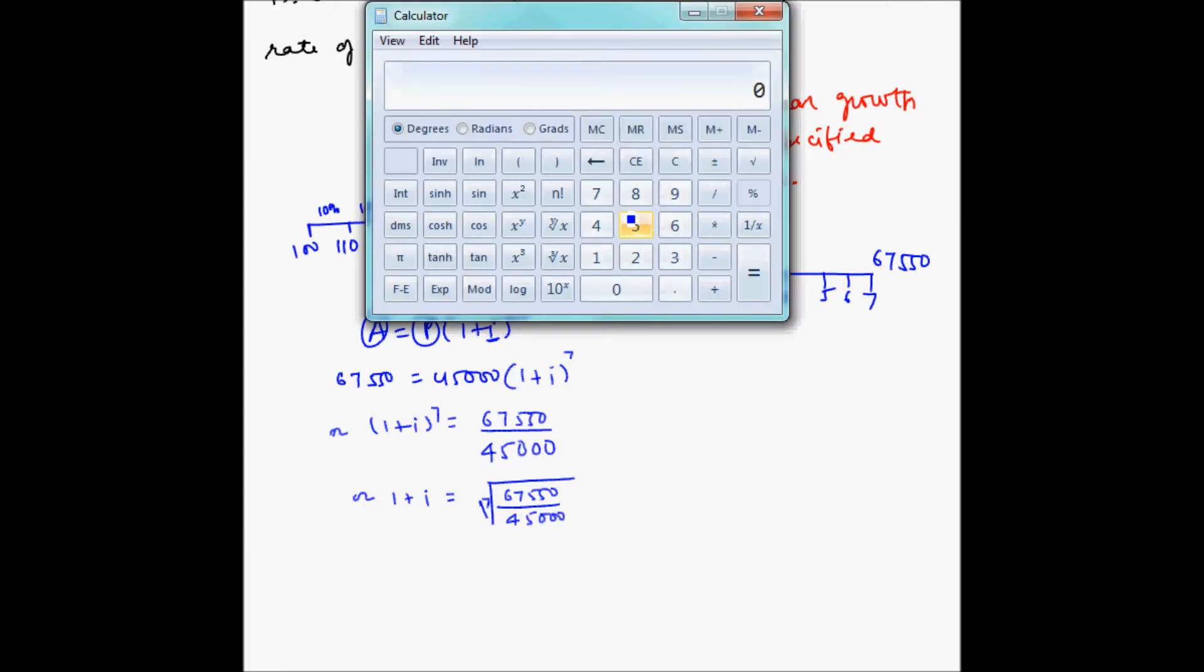So 67,550 divided by 45,000. So this is equal to 1.501 and we want to take the 7th root. So 1.0597 or we can say 1.06. So we will round this off.